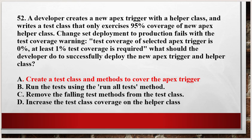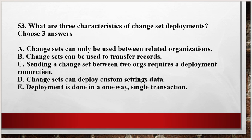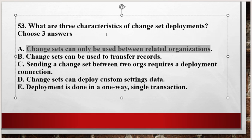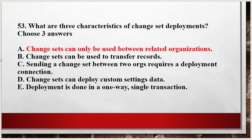Question number 53: What are three characteristics of change set development? Options: A: Change set can only be used between related organizations. B: Change set can be used to transfer records. C: Sending a change set between two orgs requires a deployment connection. D: Change set can deploy custom setting data. E: Deployment is done in a one-way single transaction. The correct answers are Option A, Option C, and Option E.